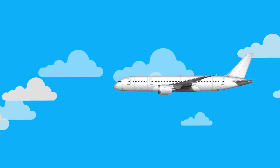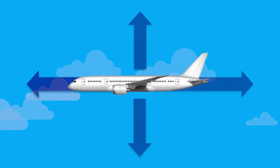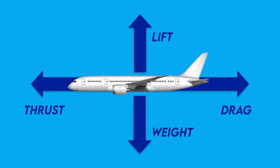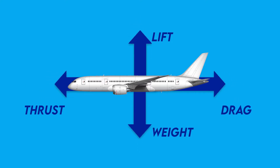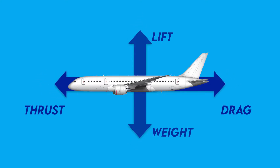There are four main forces that act on an airplane. These forces are thrust, drag, lift, and weight. These aerodynamic forces interact with and hold the plane in the air, each pushing from a different direction.